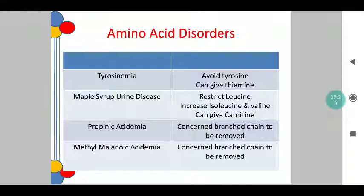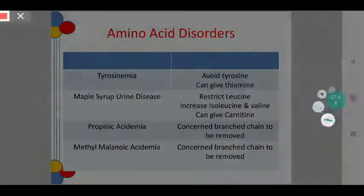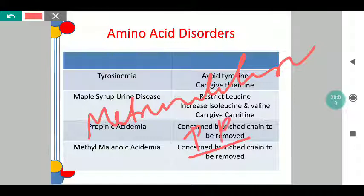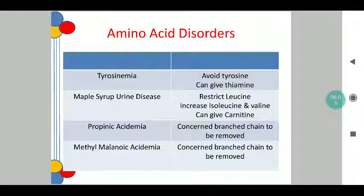For propionic acidemia, the concerned branched chain is to be removed, and there are also artificial products which can be given to supplement the diet. Methylmalonic acidemia is where the concerned branched chain is to be removed — the child requires specific amino acids but only one particular amino acid needs to be removed. A brand called Metanutrition is available where each powder comes with a specific letter subscript — P, A, B, and so on — denoting a different amino acid that has been completely removed from the product. This is not a sponsored mention but is noted for its usefulness to practitioners.